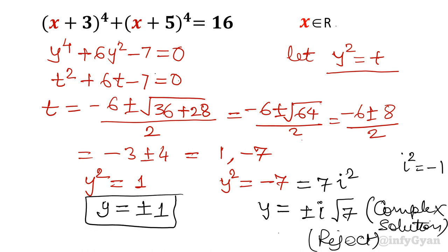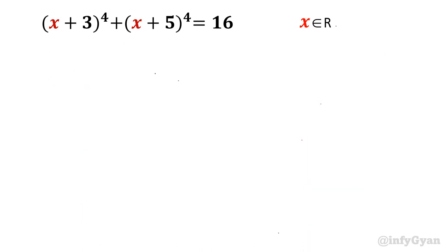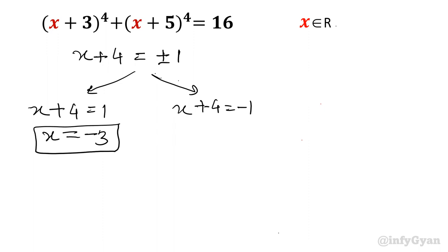So y value is ±1. Now y is actually our considered substitution x+4 = y, so let's put x+4 = ±1. So x+4 = 1 or x+4 = -1. Take away 4 both sides, so x = -3. Take away 4 both sides in this equation, so x = -5. Both are real values so accepted.